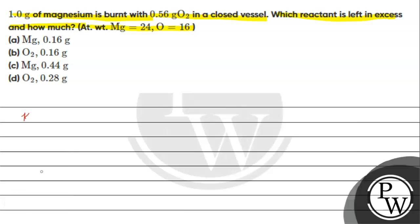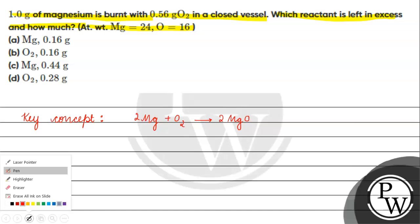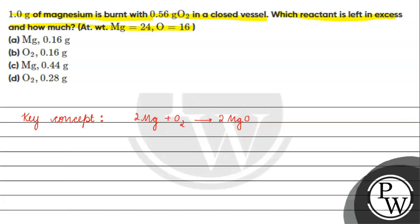The key concept for this question is the magnesium and oxygen reaction: 2 moles of magnesium will react with 1 mole of oxygen to give us 2 moles of magnesium oxide.